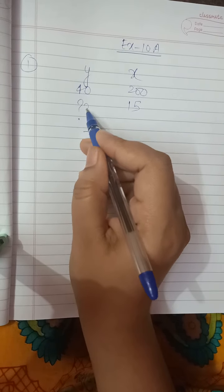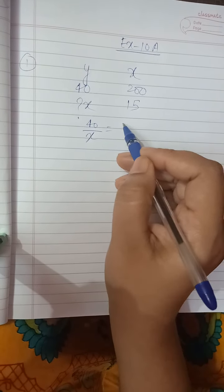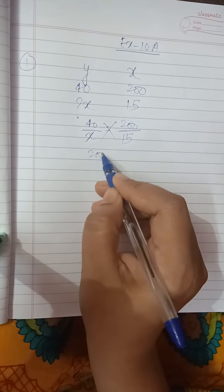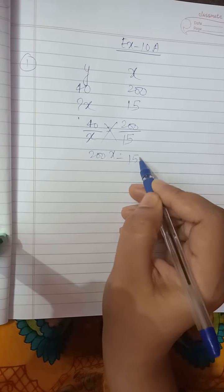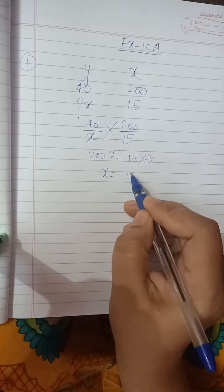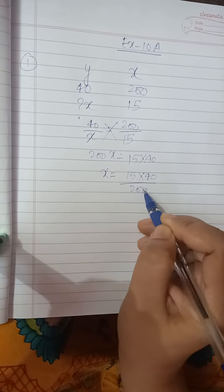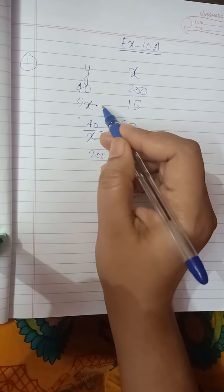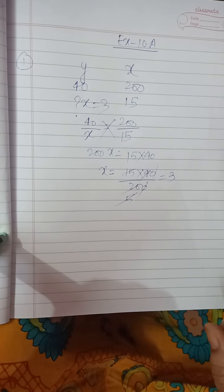Consider it as x, equals 200 upon 15. By cross multiplication, 200x equals 15 into 40. So x equals 15 into 40 upon 200. This is 3. The value of x is 3.